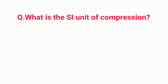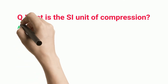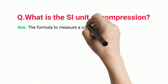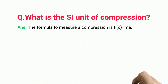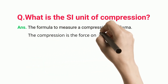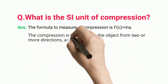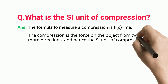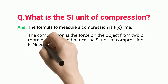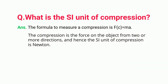What is the SI unit of compression? The formula to measure compression is Fc = ma. Compression is the force on an object from two or more directions, and hence the SI unit of compression is Newton.